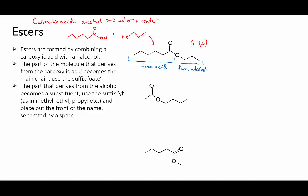To name this, we call the part that used to be the carboxylic acid the main chain, and it takes the suffix -oate. So this part of the molecule is called hexanoate.